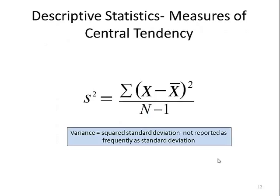The variance is the squared standard deviation. It's not reported as frequently as the standard deviation because it's not a number that is representative of the values in the sample.